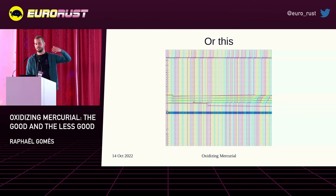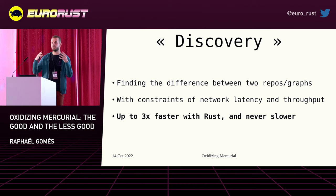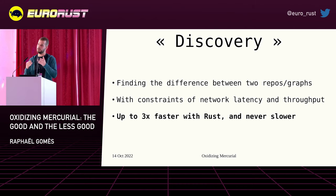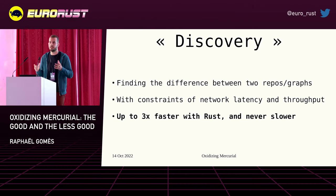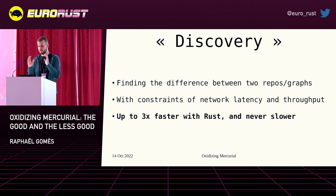If your history looks like that, you have to find algorithms that can handle that kind of complexity. One of those is called the Discovery Algorithm. It's what happens when you do a pull or a push — one of the first things it needs to do is find the difference between the two repositories. It has constraints of network latency and throughput, so depending on the situation it might not do the exact same thing. The algorithm is very simple — about 250 lines of code — and we rewrote it in Rust. It was up to three times faster and never slower in any case. Very successful.